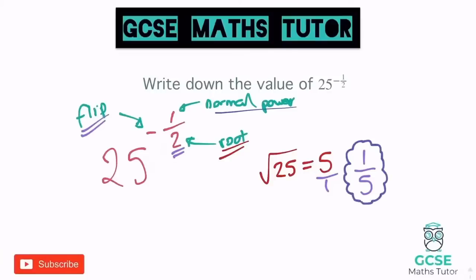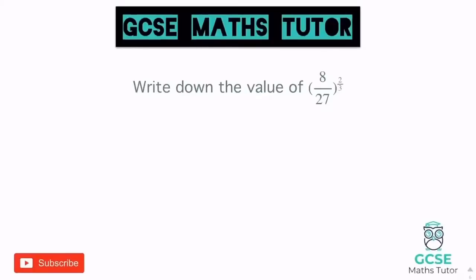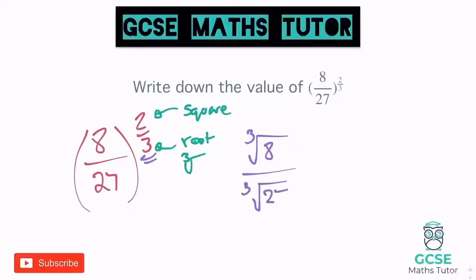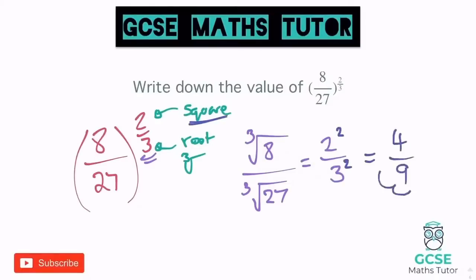Write down the value of 8 over 27 to the power of 2 thirds. No negative in this one, so we won't flip it, but we have two numbers to deal with. On the bottom is a 3, meaning cube root. On the top is a normal power of 2, meaning we square the numbers. Doing the cube root first: cube root of 8 is 2, and cube root of 27 is 3, giving us 2 thirds. Now squaring both: 2 squared is 4, 3 squared is 9. Final answer: 4 over 9.